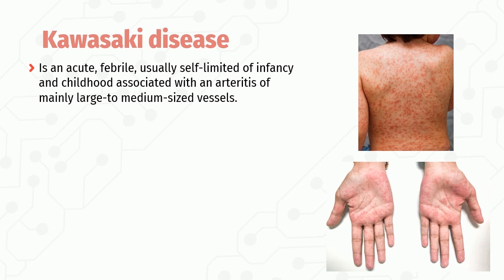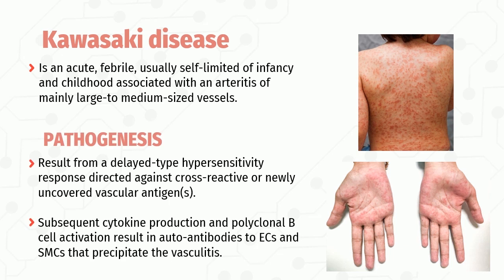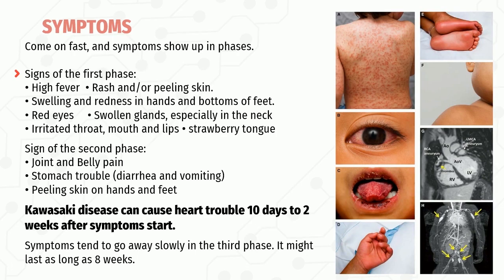Kawasaki disease is an acute febrile, usually self-limited vasculitis of infancy and childhood. Its pathogenesis results from a delayed-type hypersensitivity response against cross-reactive vascular antigens, subsequent cytokine production, and polyclonal B-cell activation, resulting in autoantibodies to endothelial cells and smooth muscle cells. Symptoms come on fast in phases: the first phase includes high fever, rash, peeling skin, irritated throat, mouth and lips, red eyes, swollen glands, and strawberry tongue. The second phase includes joint pain, belly pain, diarrhea, vomiting, and peeling skin on hands and feet. Heart complications can appear 10 days to two weeks after symptom onset.